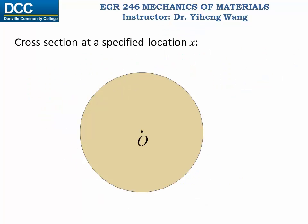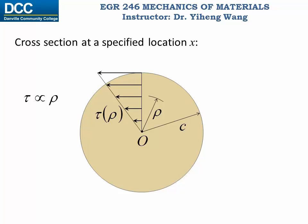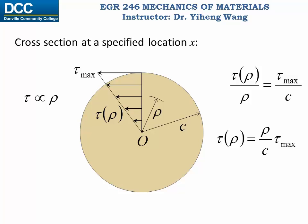Therefore if we look at a cross section at a specified location x, it has a radius of constant c and the arbitrary radial position is represented by variable rho. Since shear stress tau and radial position rho are proportional to each other, shear stress develops proportionally with rho, with the maximum shear stress tau max occurring at the outside of the shaft where rho equals c, the radius. Therefore the shear stress at any arbitrary radial position rho divided by rho equals tau max over c.